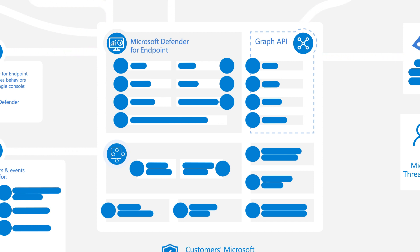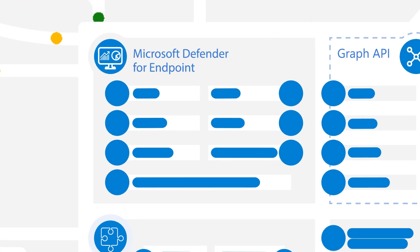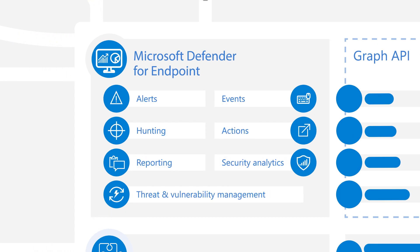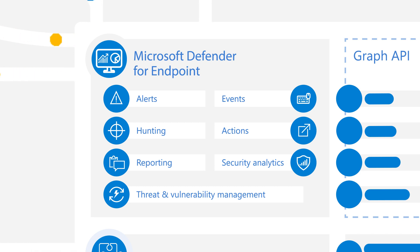Let's start with the Microsoft 365 Defender portal. Security teams use the portal to access their Defender for Endpoint data and to interact with endpoints. They might investigate potential threats, respond to a breach, or improve their security postures — it's where the security analysis happens. The portal provides dashboards, a variety of reports, and different views of individual entities, and security analysts can quickly pivot from one data point to another.